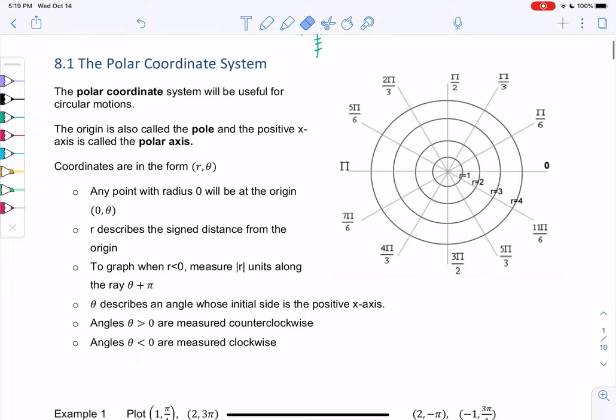The points are in the form (r, θ). We get a radius and an angle. When the radius is 0, that'll just be the origin, regardless of the angle, because basically there is no radius. The angle doesn't matter.